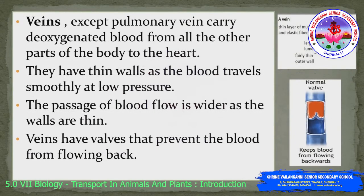The next type of blood vessel is veins. Veins, except the pulmonary vein, carry deoxygenated blood from all parts of the body to the heart. They have thin walls as the blood travels smoothly at low pressure, and the passage of blood flow is wider. Veins have valves that prevent the blood from flowing back.